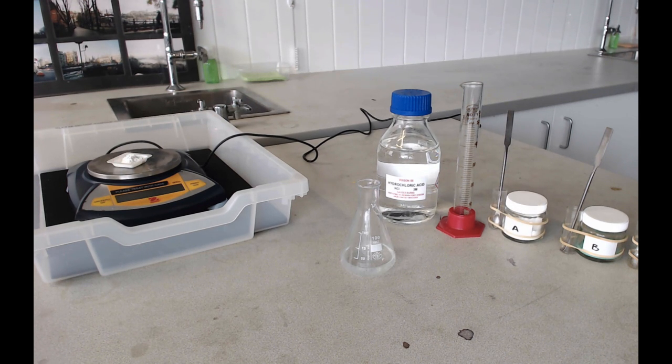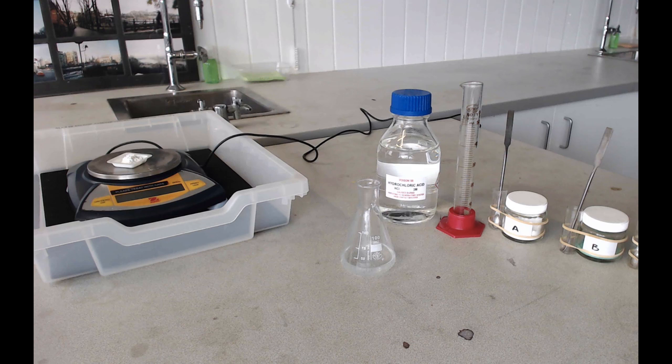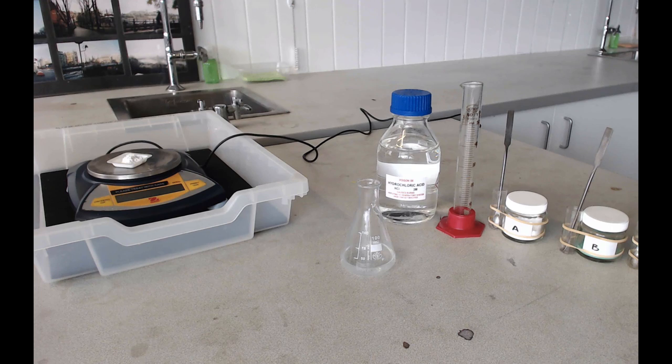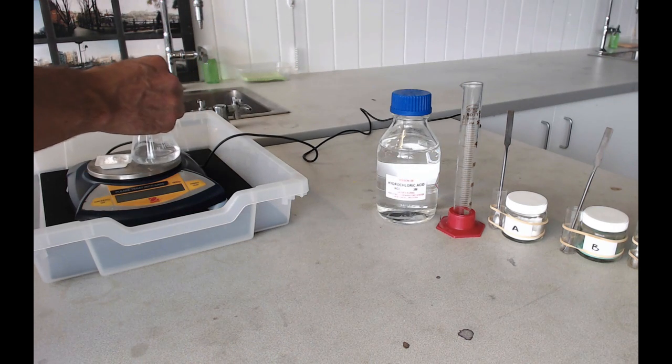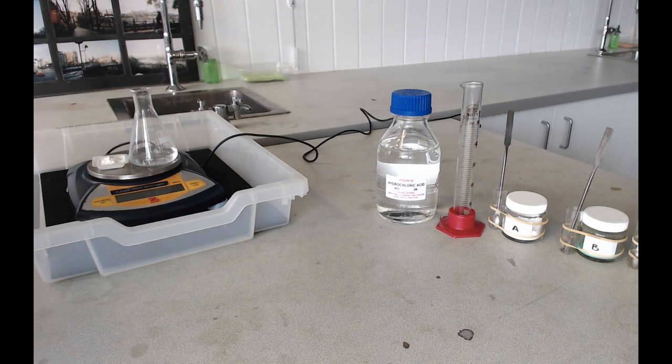Before you place your solid into your acid, it's important to know how much the solid and the acid weigh together, because what you're going to try and do here is see how much weight is lost when the solid reacts with the acid. The simplest way to do that is to place both of the things on the balance together and to record how much they weigh together.